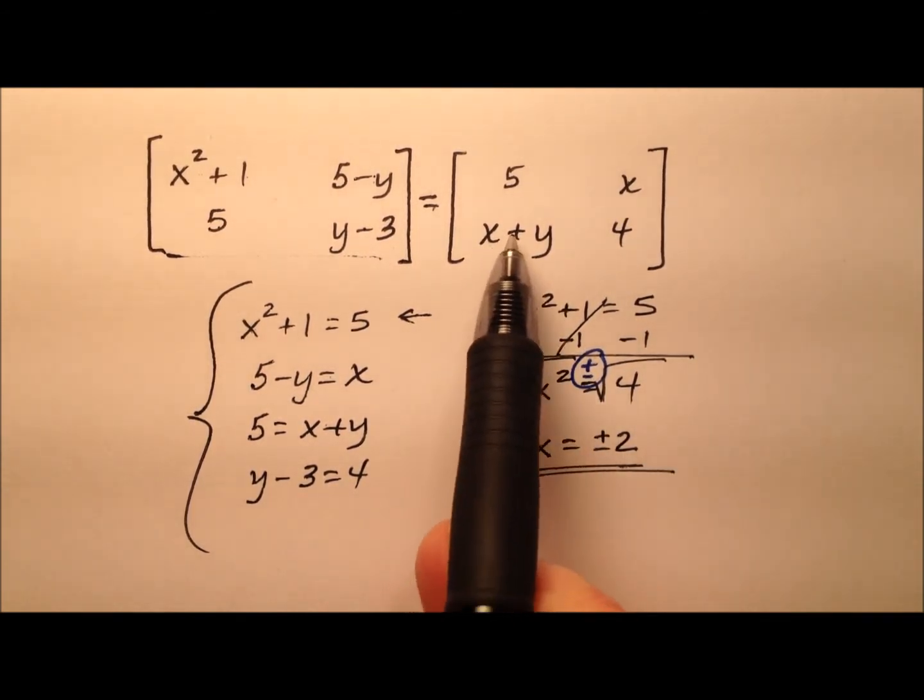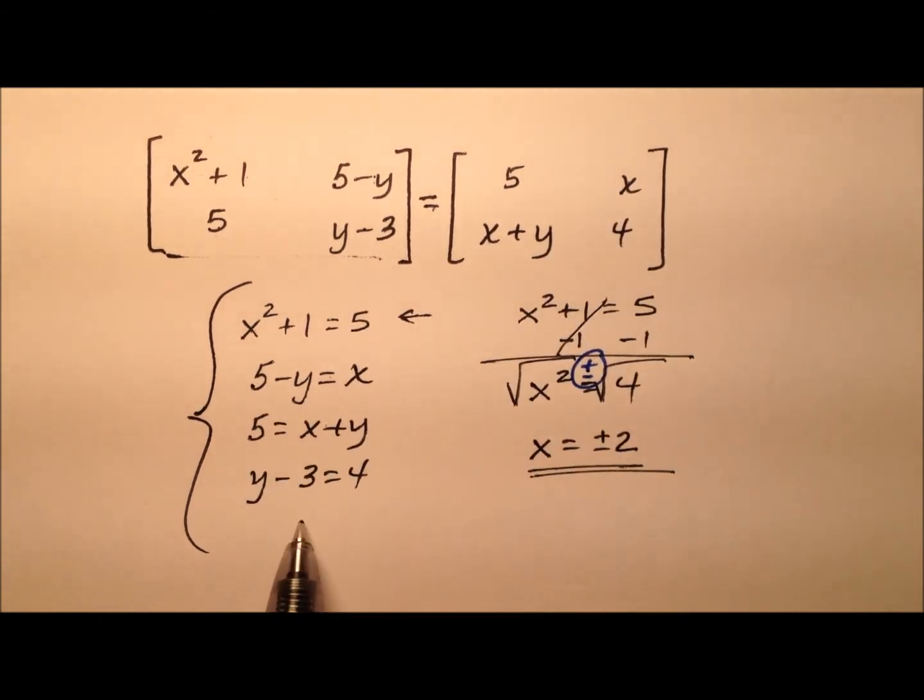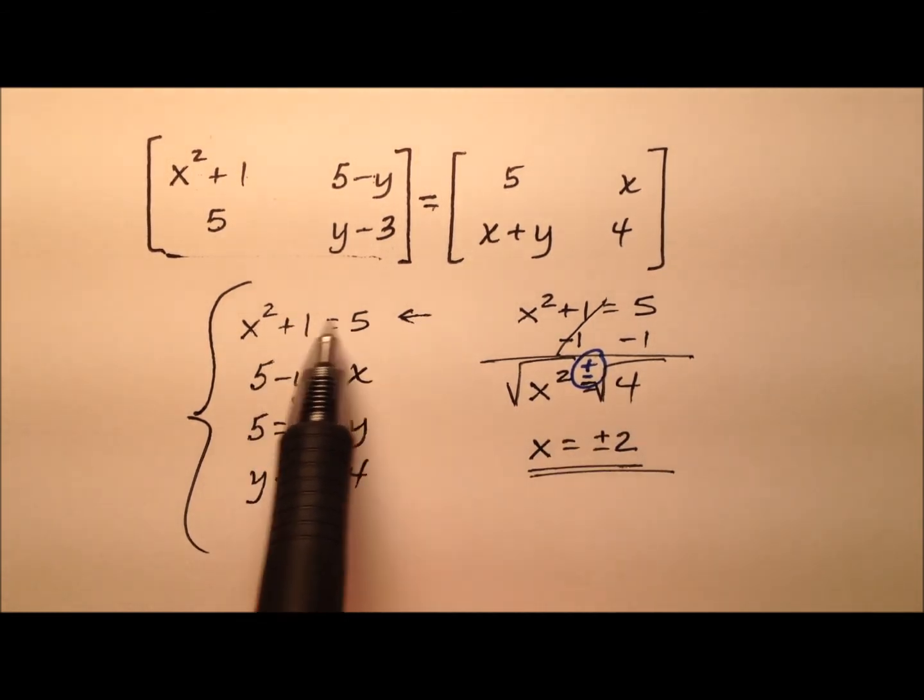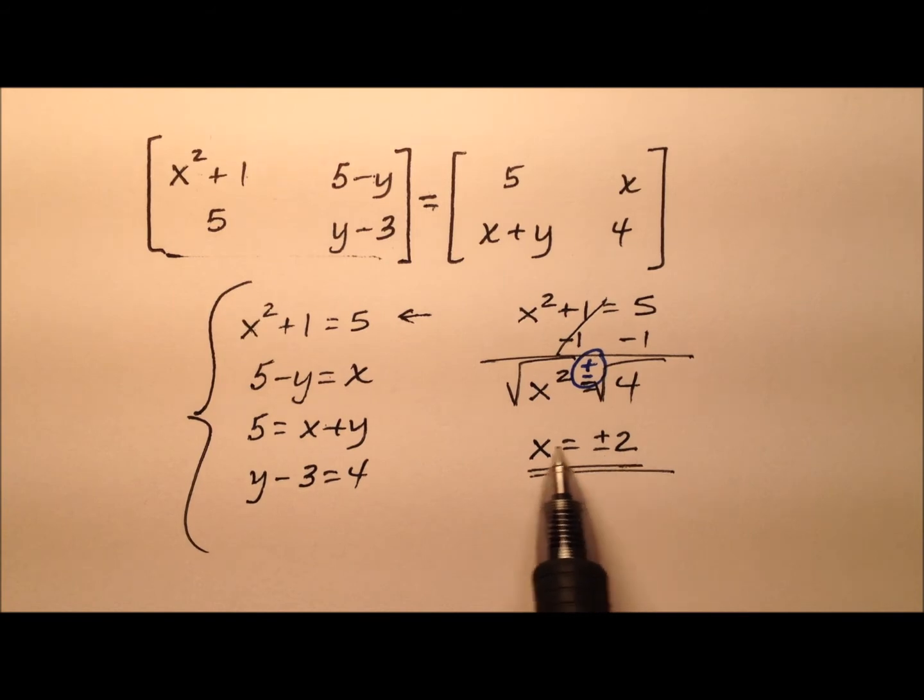Well, it can't be both values because we have other equations that are all linear in nature. So it has to be one of them, either positive two or negative two. This first one doesn't help us that much, but it helps us a little. We know one of these two values is correct for x.